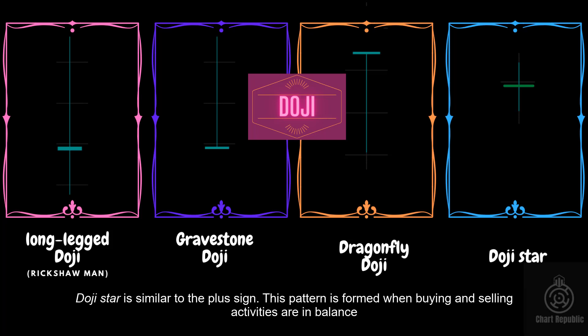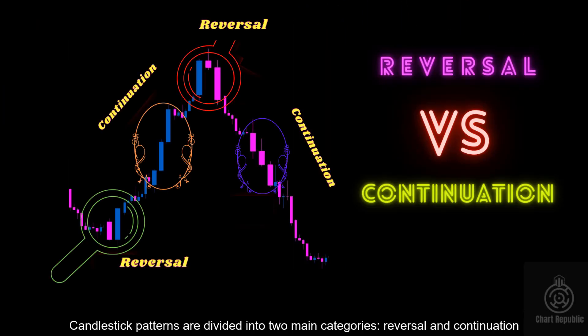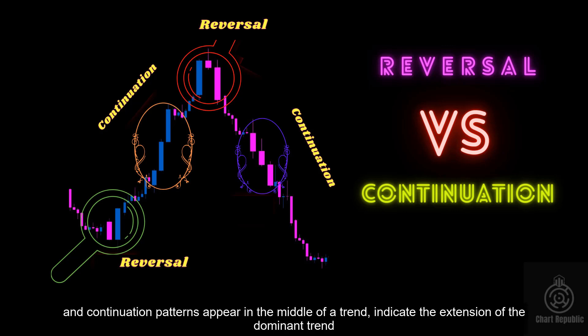Doji star is similar to the plus sign. This pattern is formed when buying and selling activities are in balance. Candlestick patterns are divided into two main categories: reversal and continuation. Reversal patterns appear at the end of an up or down trend and predict a reversal in a trend, and continuation patterns appear in the middle of a trend and indicate the extension of the dominant trend.